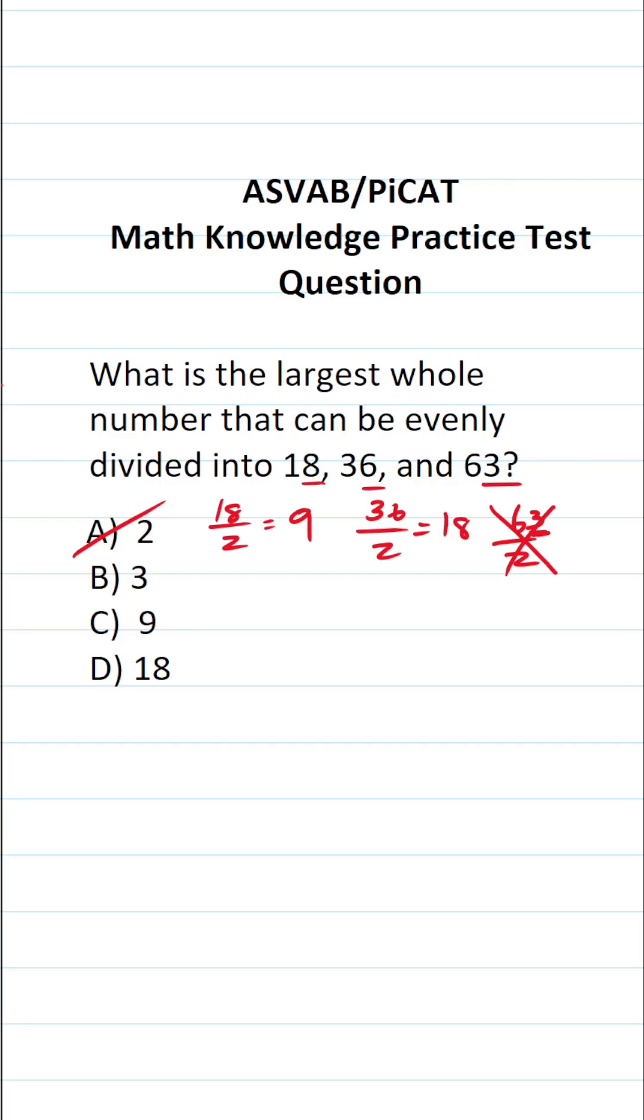Let's move on to 3. Is 18 divisible by 3? It's 6. Is 36 divisible by 3? It's 12. Is 63 divisible by 3?